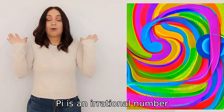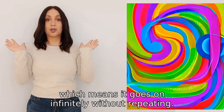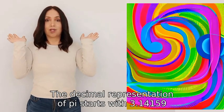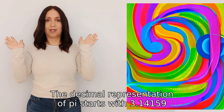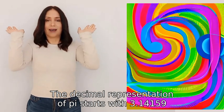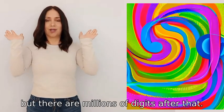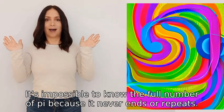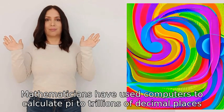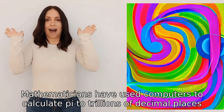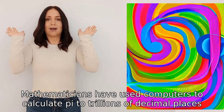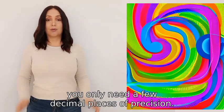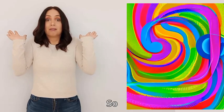Pi is an irrational number, which means it goes on infinitely without repeating. The decimal representation of pi starts with 3.14159, but there are millions of digits after that. It's impossible to know the full number of pi because it never ends or repeats. Mathematicians have used computers to calculate pi to trillions of decimal places, but for most everyday calculations you only need a few decimal places of precision.